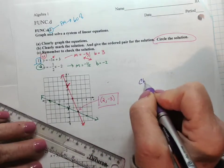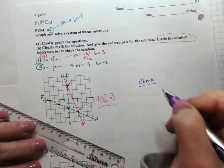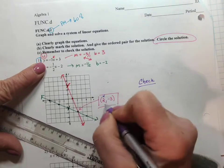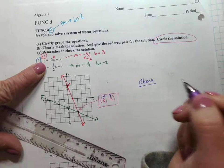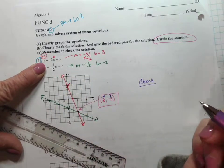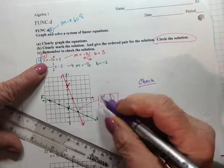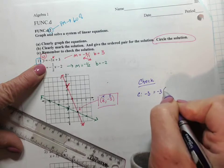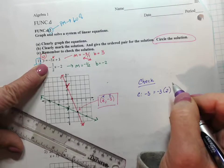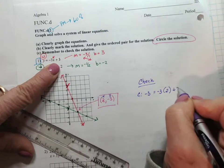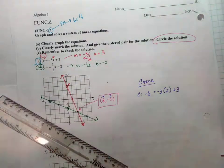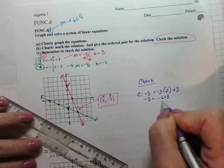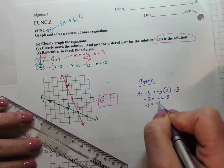Finally, we check. We want to make sure we get this problem right. We're going to take this ordered pair that has x is 2 and y is negative 3. And we're going to plug it into both original equations. So we check the first equation. y is negative 3 equals negative 3. x is 2. Okay. Plus 3. So we get negative 3 is equal to negative 6 plus 3. Negative 3 equals negative 3. Cha-ching. It checked in the first equation.